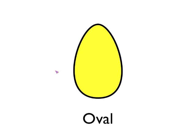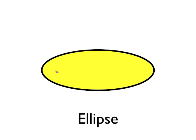This is an oval. Looks quite like an egg really, doesn't it? And this shape is an ellipse.